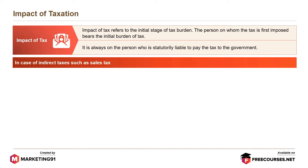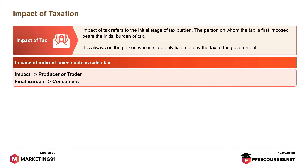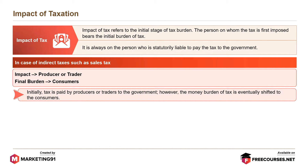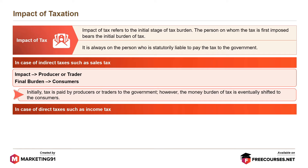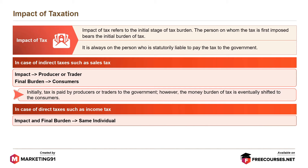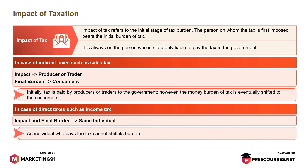In case of indirect taxes such as sales tax, the impact is on the producer or trader, and the final burden is on the consumers. Initially, tax is paid by producers or traders to the government. However, the money burden of tax is eventually shifted to the consumers. In case of direct taxes such as income tax, the impact and final burden is on the same individual. An individual who pays the tax cannot shift its burden.